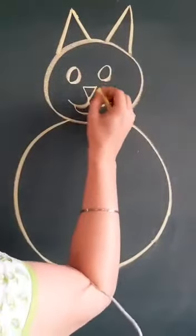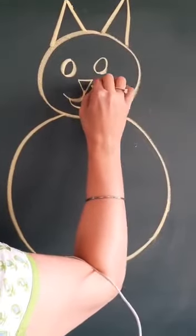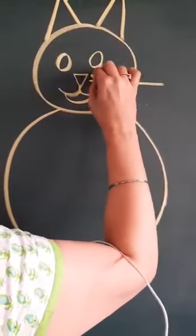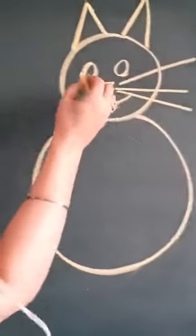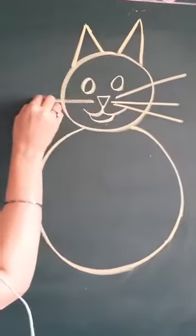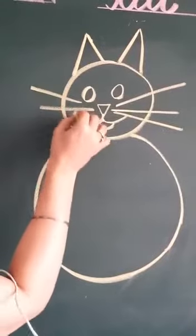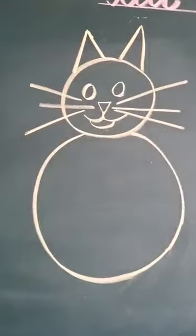Abhi hamne iske mouchhe banani hai. Mustaches banani hai. To here, we will make one sleeping line. One slanting. One slanting line here. Ishi ke opposite. Here, we will make one sleeping. One slanting. And one slanting line.